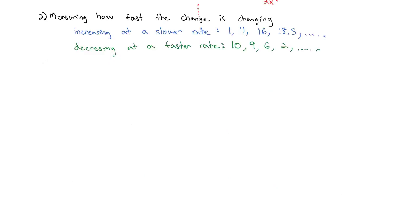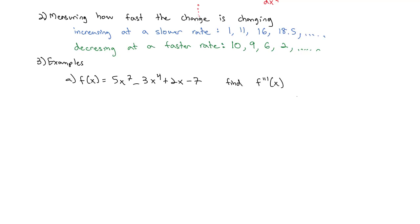Let's do some examples. Let's say f(x) = 5x⁷ - 3x⁴ + 2x - 7, and we want to find the third derivative — how much change is in the change of the change. To do that, we calculate the derivatives one at a time. For the first derivative: move the 7 out front to get 35x⁶, move the 4 out front to get minus 12x³, plus the derivative of 2x is 2.